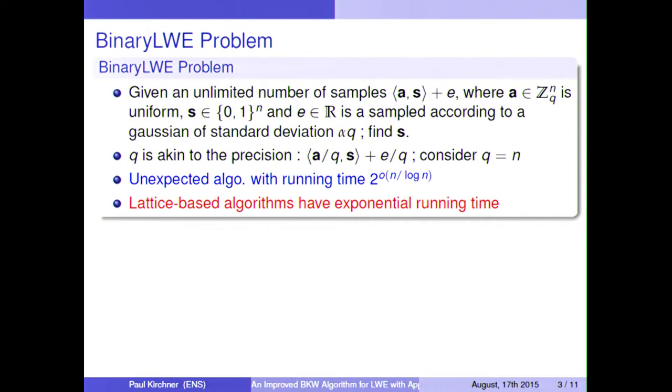Because we are using binary vectors, the modulus q is akin to the precision. We can divide everything by q and this will be simpler for us to work. For this problem, we know that it's unexpected to have an algorithm with running time below 2^(n/log n), but all previous algorithms work in exponential running time.